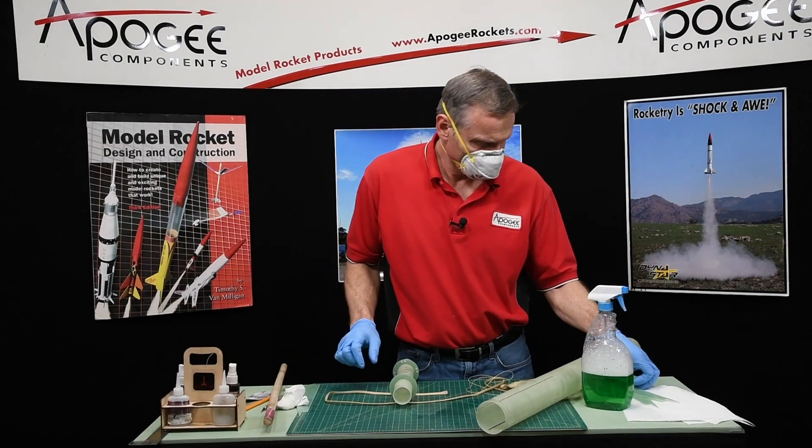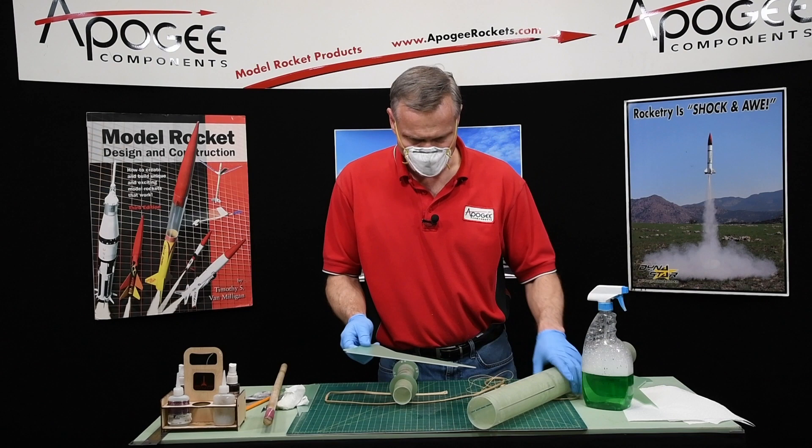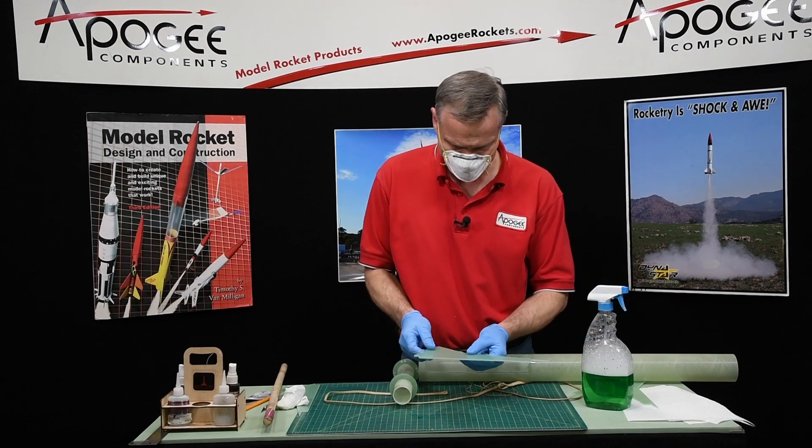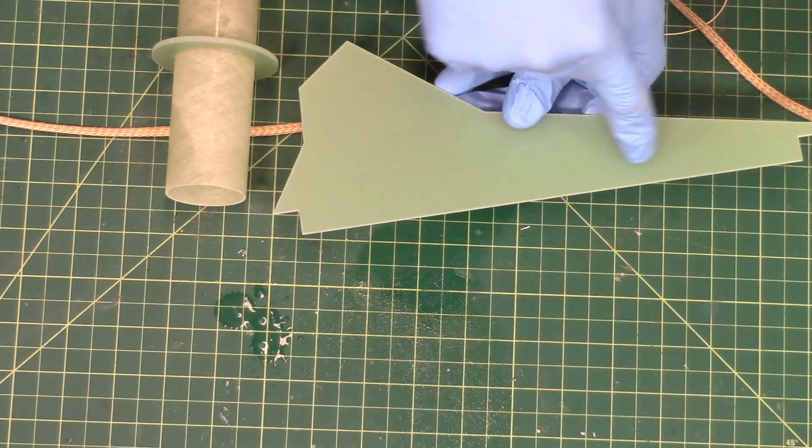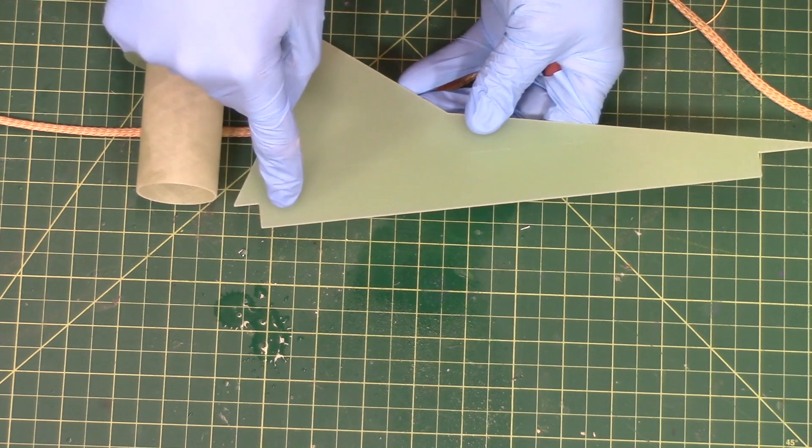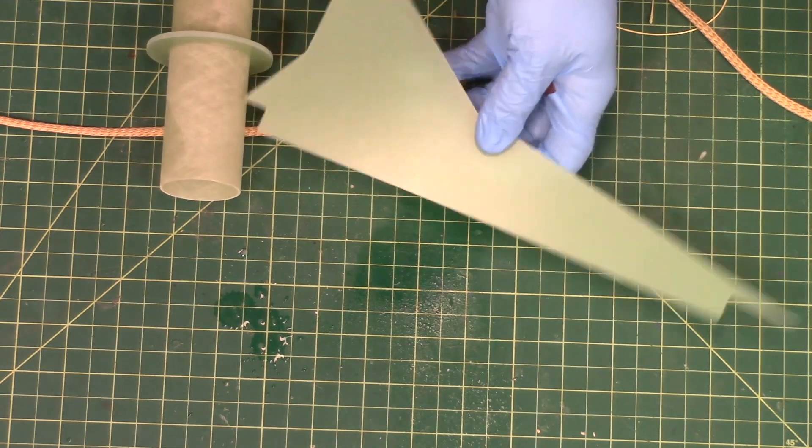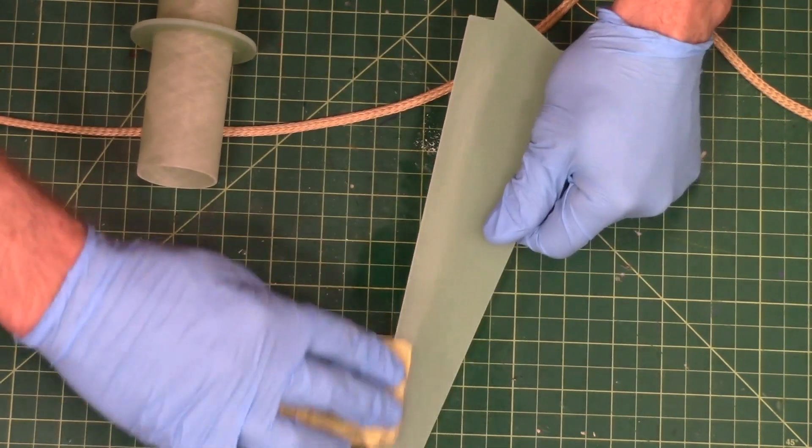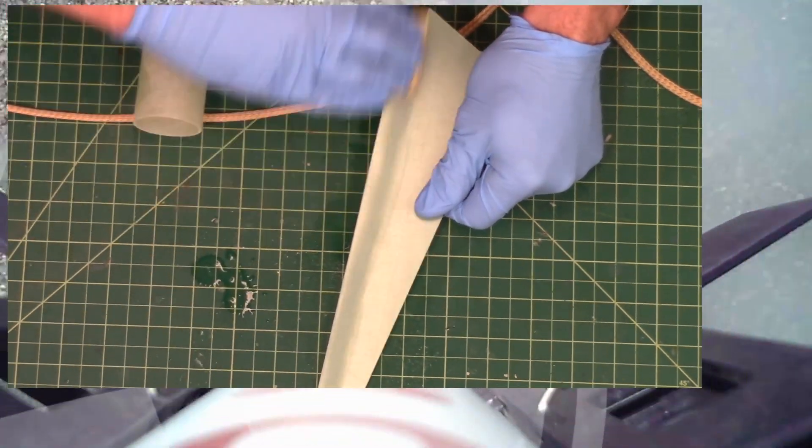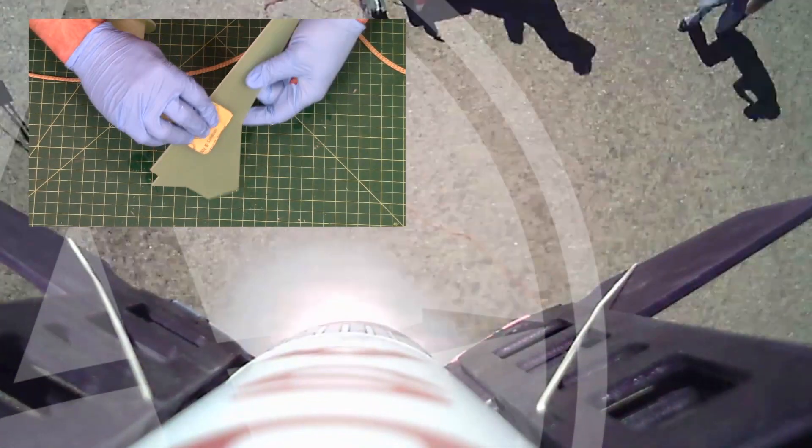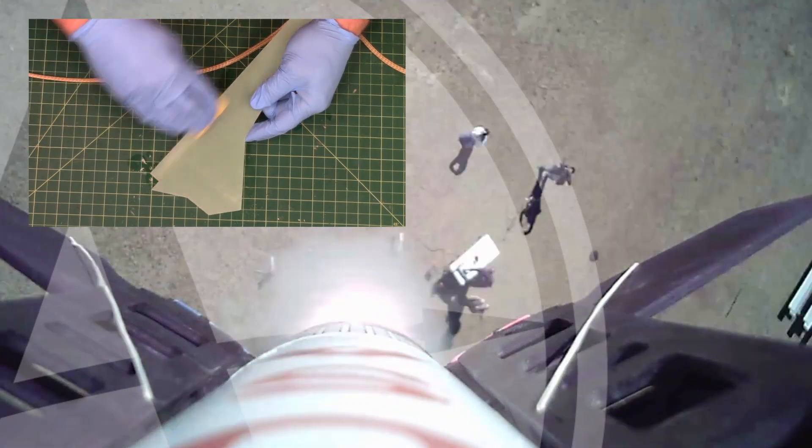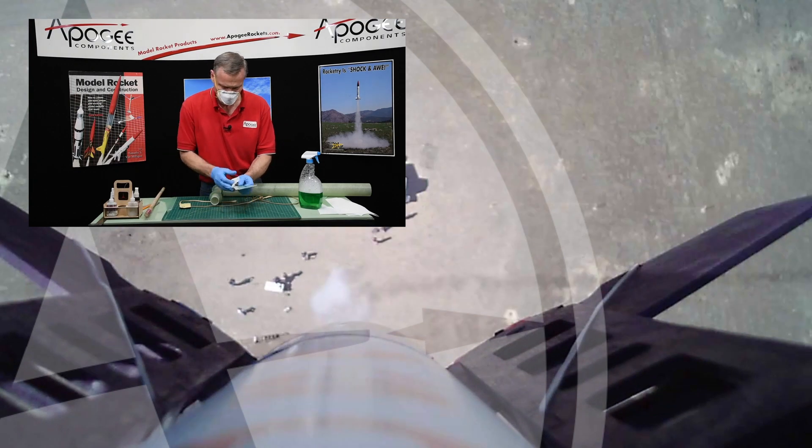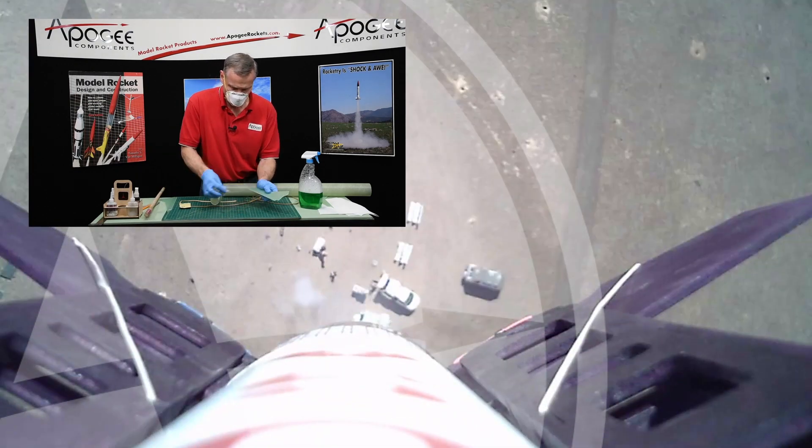And on the fins themselves, we want to scuff just below that corner joint right there. Just give it a little bit of epoxy something to bond to. So go ahead and do that, and then we'll start putting things together.